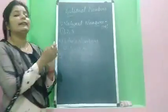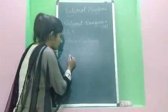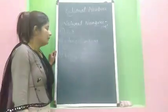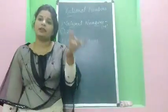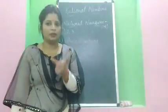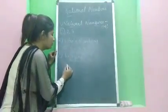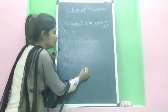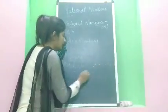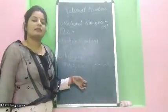The third category — can anyone guess? Integers. Integers include 1, 2, 3, 4 and also the negatives of whole numbers: minus 1, minus 2, minus 3. These are your integers. Integers can be negative.